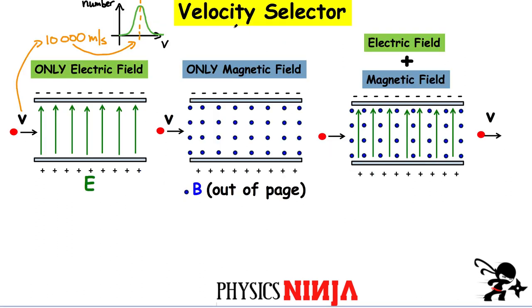The second part is the velocity selector. Our nickel atom comes out of the accelerator at about 10,000 m/s, but in reality there is a distribution — different isotopes with different masses come out at a spread of velocities. The velocity selector is depicted on the right-hand side; it's a region containing both an electric field and a magnetic field B, which are perpendicular to each other.